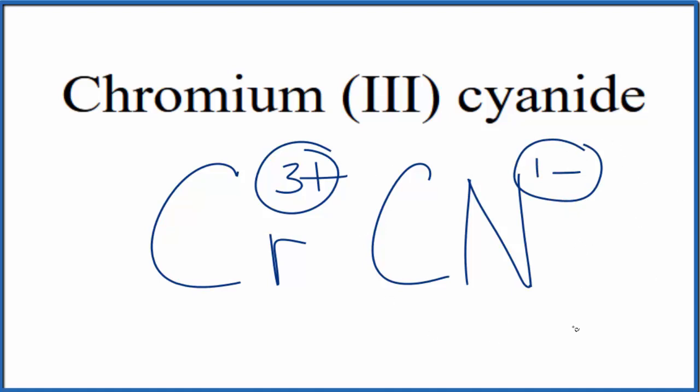So if we had three of these cyanide ions here, 3 times 1-, that would give us 3-, that would balance out the 3+, give us a net charge of zero. But because we have three separate cyanide ions here, we do need to put parentheses around the cyanide ion.